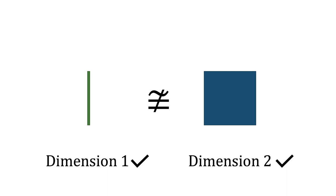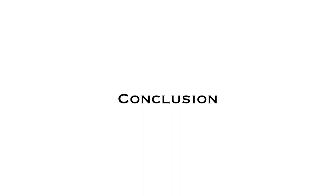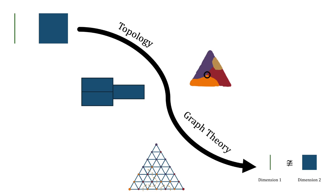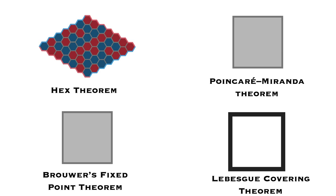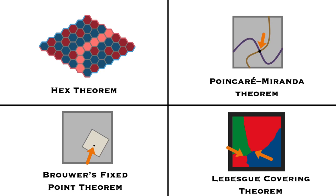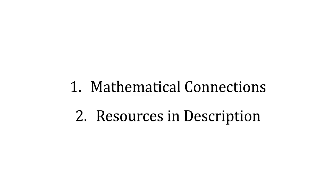In conclusion, I hope you have enjoyed this journey, learning how a very simple question about whether a line segment and a square are the same took us through a whole world of mathematics — including topology and graph theory — to answer this question. I want to leave you with two final things. First, there are numerous mathematical connections to the ideas discussed here, including several theorems related to Sperner's lemma and the Lebesgue covering dimension — I encourage you to look those up. And finally, there are many resources in the description of this video if you are interested in learning more. Thank you so much for watching, and I'm grateful to have participated in the Summer Math Exposition.